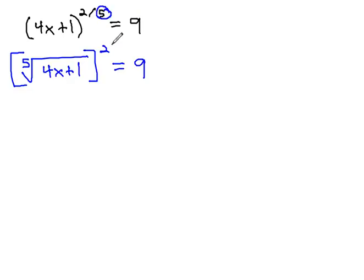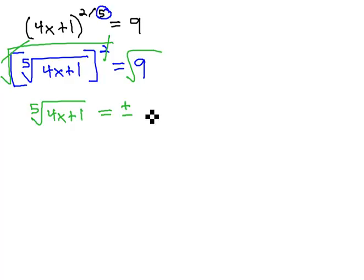Notice, we have an even exponent on the outside. To clear that even exponent, we will take a square root. The opposite of squaring is a square root of both sides. Because square and square root are inverses, it will just leave what's inside the parentheses, the 5th root of 4x plus 1 equals, and because we're getting rid of an even exponent, we remember a plus or minus 3.